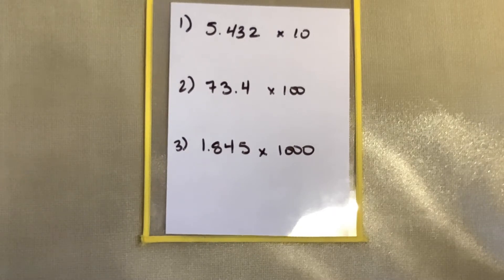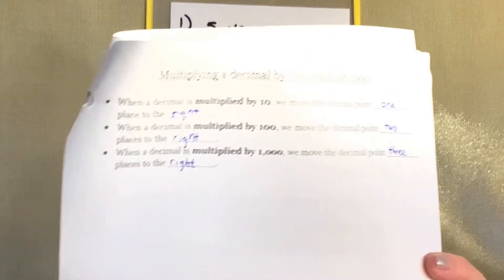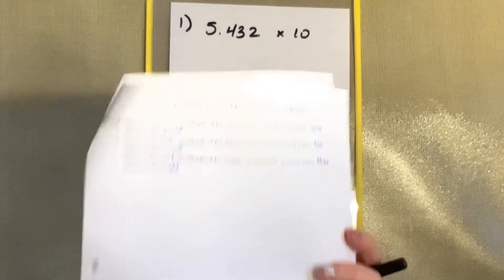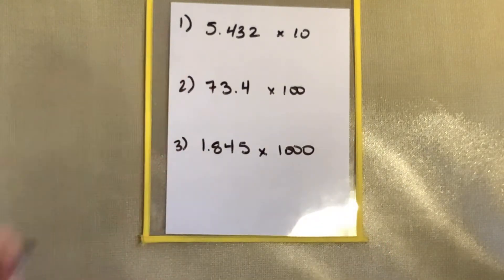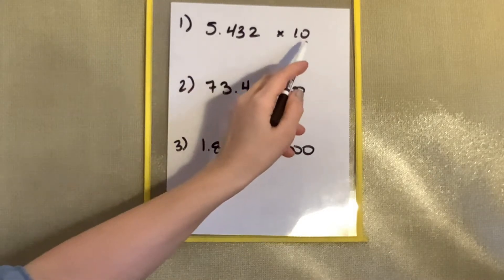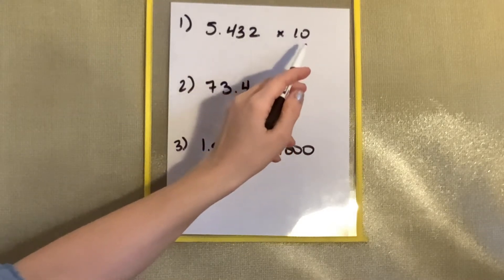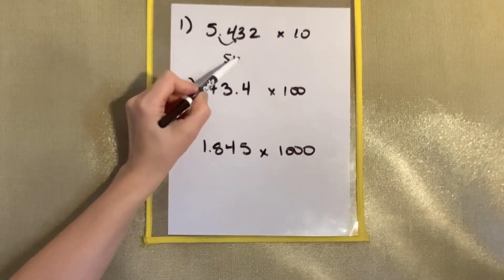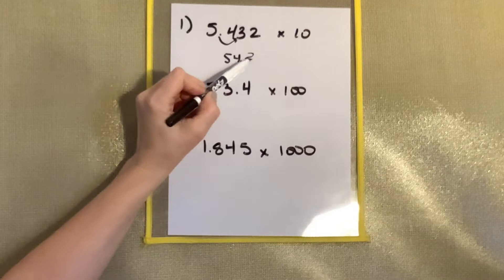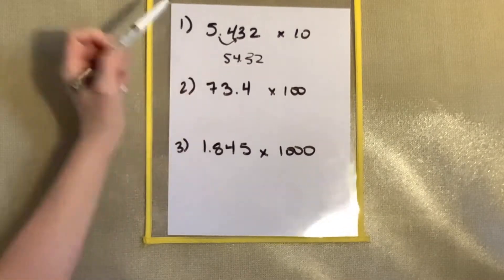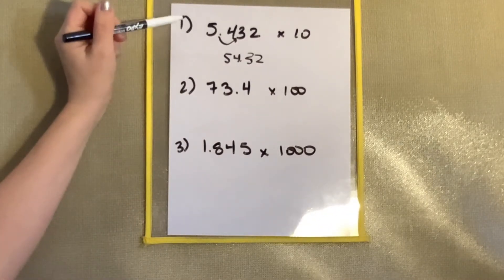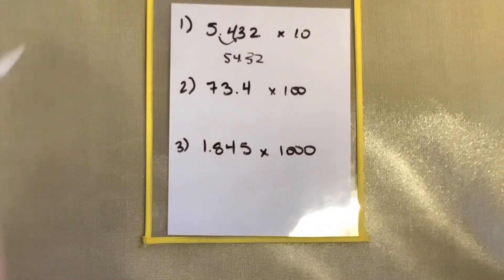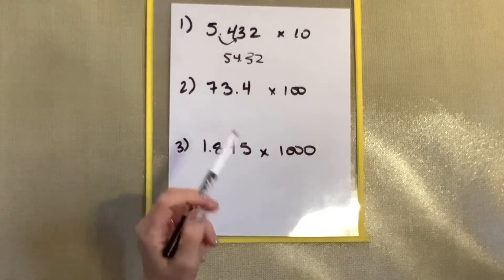Hopefully you're remembering what we worked on with our notes. When we're multiplying by 10s, 100s, 1,000s, it's just a matter of moving our decimal point. So when we multiply by 10, we see one zero, so we're going to move that decimal point one to the right, so you should have 52 and 3,200s. I do not want you writing them vertically — just use this moving of the decimal point.